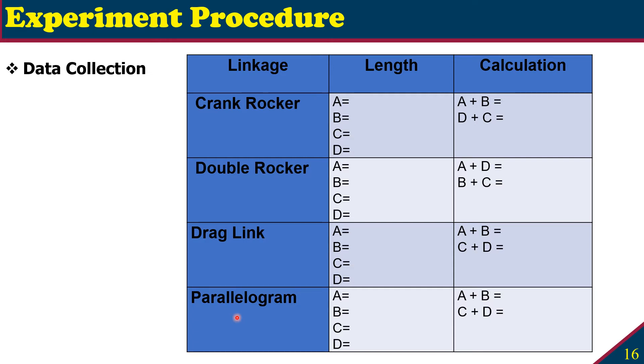Double rocker, third one is drag link, and the final one is parallelogram linkage. The data collection is pretty straightforward. You have to measure the length of each of the four links for each linkage arrangement and calculate A plus B for each arrangement.